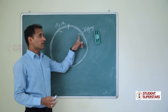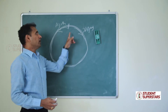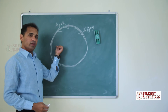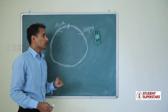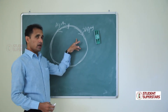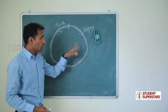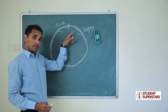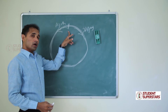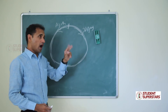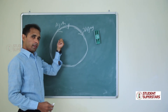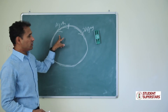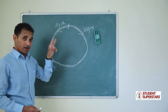Vijay is crossing the starting point on every third minute and meeting Ajit on every minute. Vijay is running in this direction and Ajit is running in the opposite direction. The question is: what is the time taken for Ajit to complete the entire circular track?